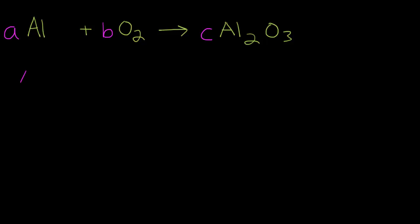Okay, so let's start with aluminum. So in the A molecule we have one aluminum. In the B molecule we have none. Our arrow is going to become an equal sign. And in the C molecule we have two aluminums.